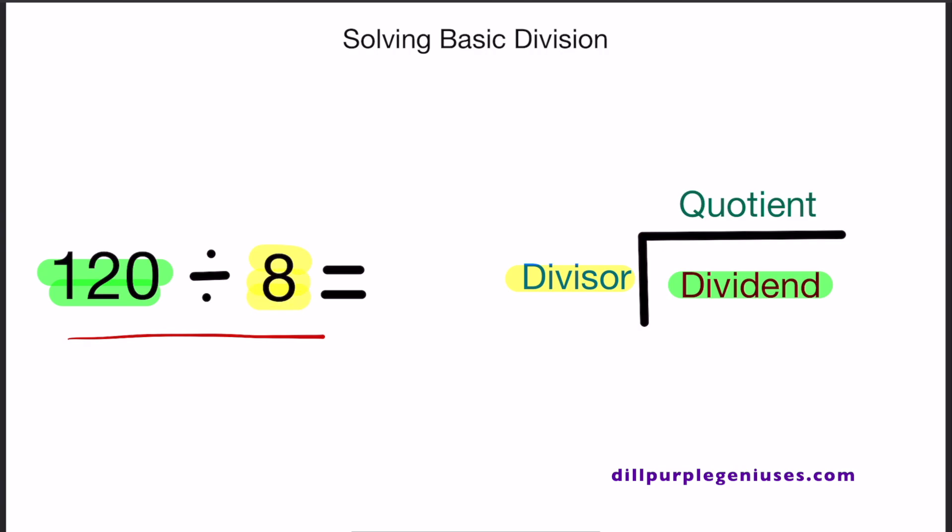But on top of the problem, we have what's called a quotient. The quotient is the result of a division problem. Remember in multiplication, when you multiply two numbers together, you get what is called a product. But in this case, you get a quotient.